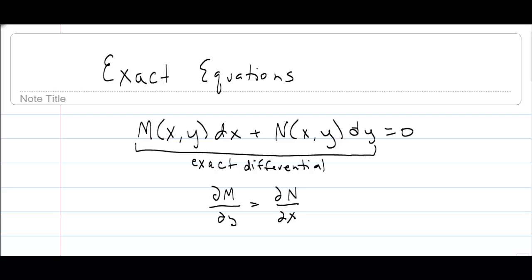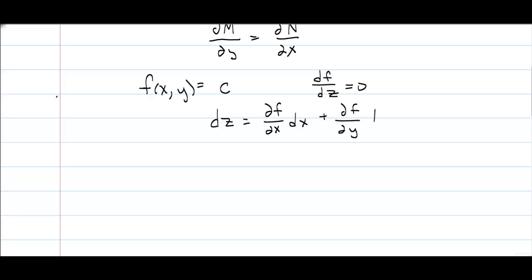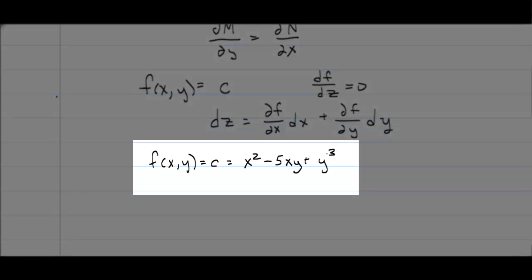If you haven't had multivariable calculus, you're not going to know how to do a partial derivative, so let me go ahead and do a quick example. We're going to talk about some function of x and y that equals a constant, because if the function f is a constant, its first derivative will be equal to 0. The differential dz equals the partial of f with respect to x times dx plus the partial of f with respect to y times dy. So consider f(x,y) = x² - 5xy + y³.